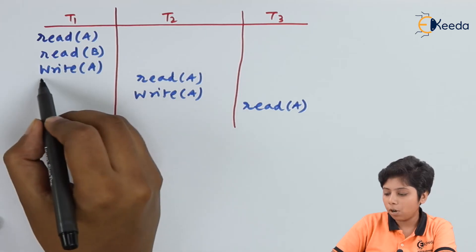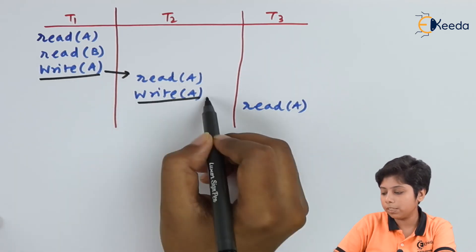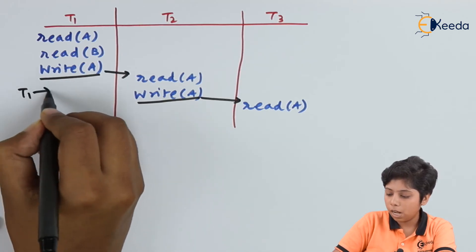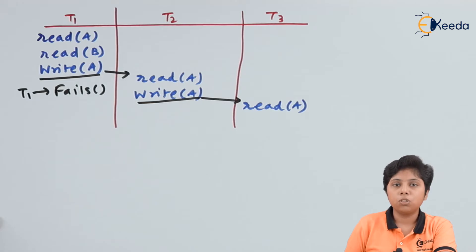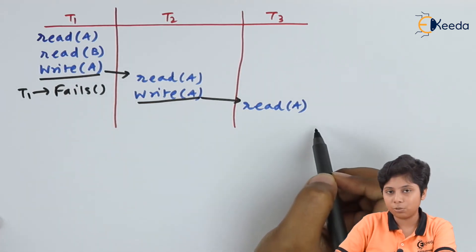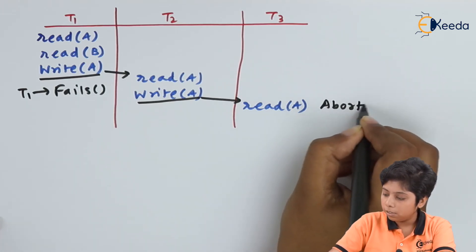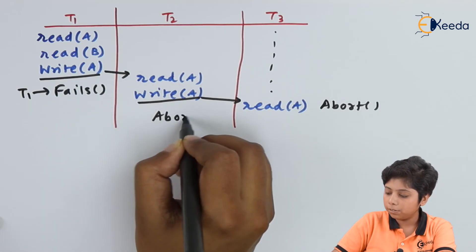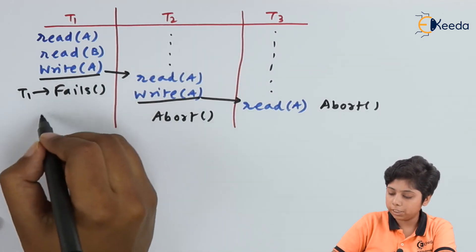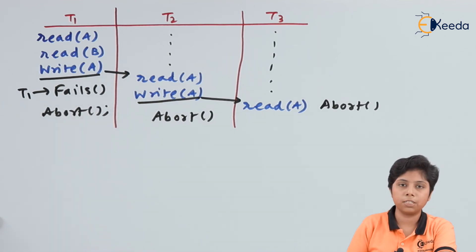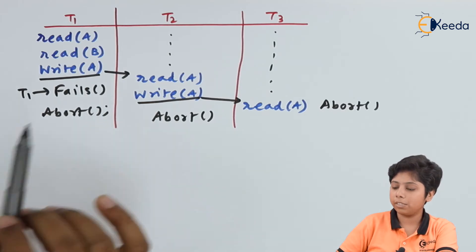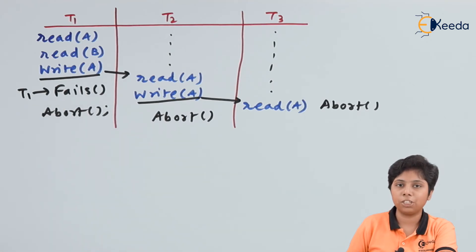So T1 writes, then T2 reads and writes, then T3 reads. Now if T1 fails, since T2 was reading T1's write, T2 needs to be aborted. And since T3 was reading T2's write, T3 also needs to be aborted. For a single transaction failure, several transactions need to be rolled back. This is known as a cascading rollback.